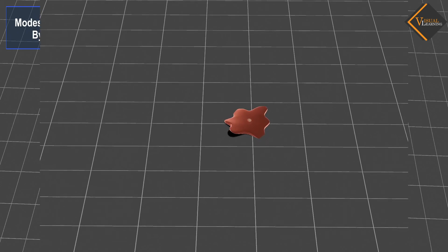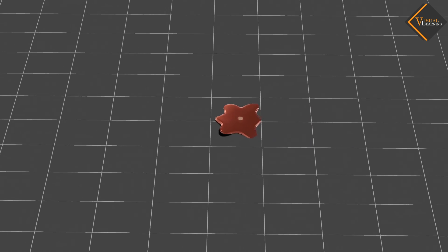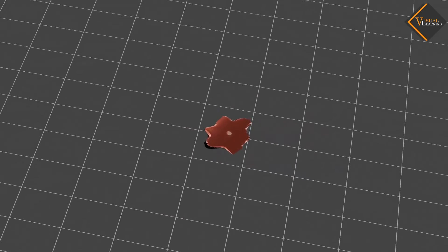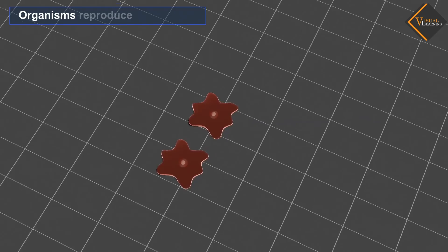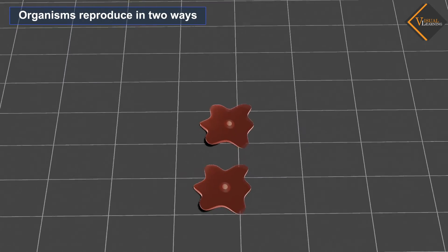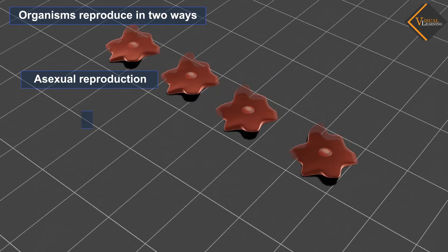Different organisms reproduce in different ways. Let us have a detailed look at how different organisms reproduce. The organisms reproduce in two ways: asexual reproduction and sexual reproduction.